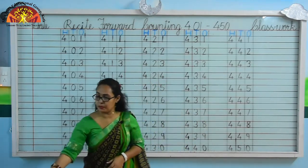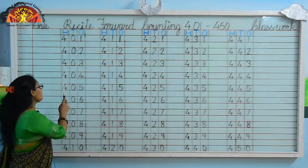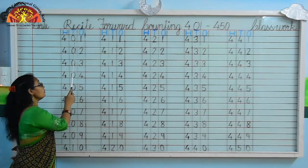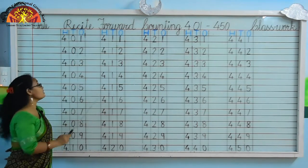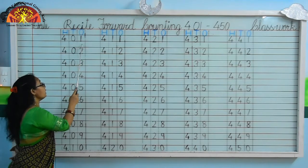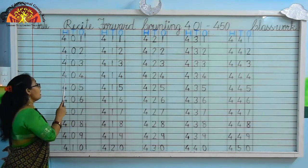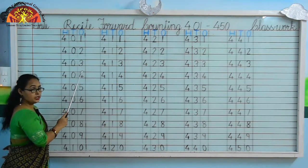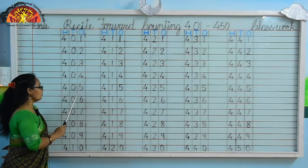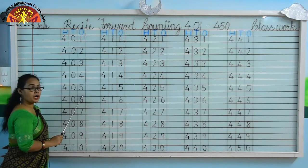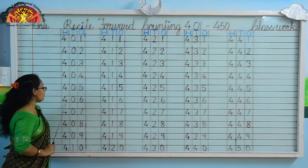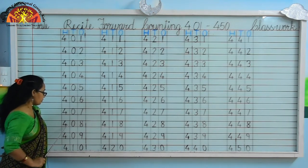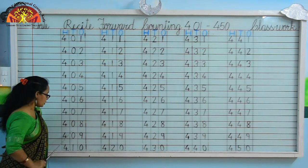Let's recite with me. What is written here? 401. Yes, 401. Now, 402, 403, 404, 405, 406, 407, 408.